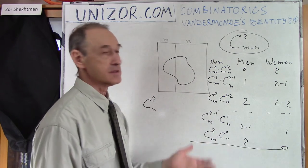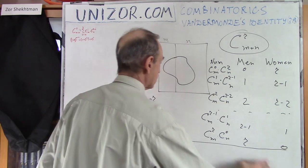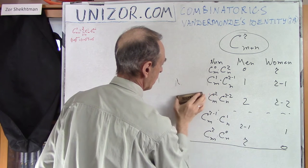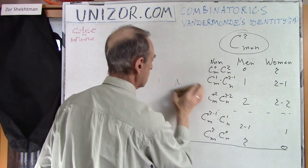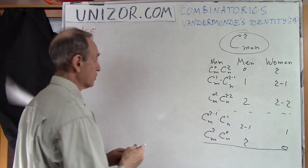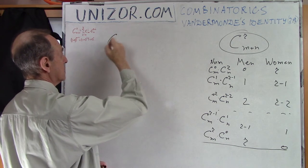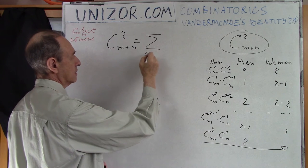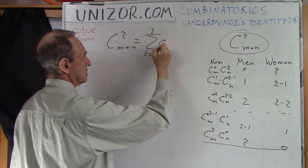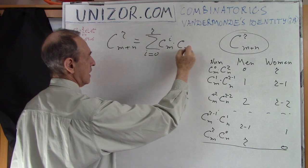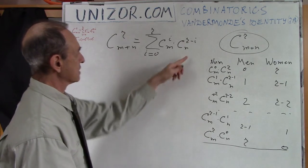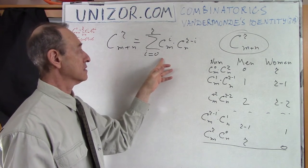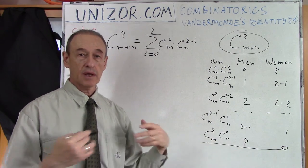This is the Vandermonde's Identity. So basically I have just proven this identity by a purely logical approach to this problem. It can be expressed as: C(M+N, R) equals the sum from i equals zero to R of C(M, i) times C(N, R−i). This is Vandermonde's Identity — a very fancy name, but a very simple explanation of where it came from.